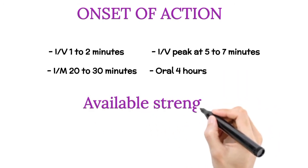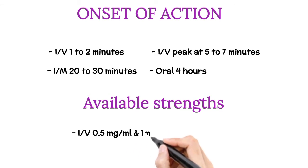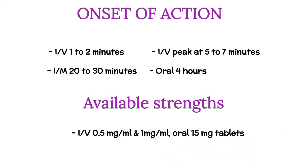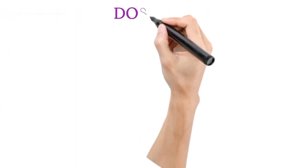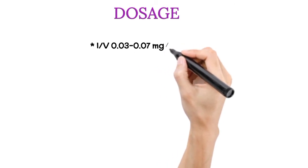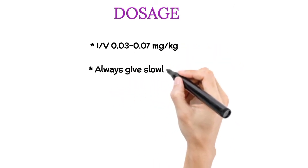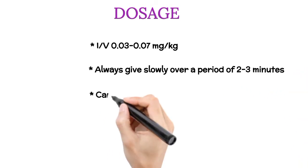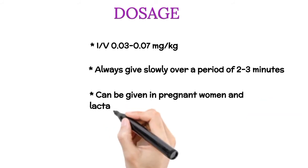Available strengths: Intravenous 0.5 mg/mL and 1 mg/mL; oral 15 mg tablets. Dosage: Intravenous 0.03–0.07 mg/kg. Always give slowly over a period of 2–3 minutes. Can be given in pregnant and lactating mothers.